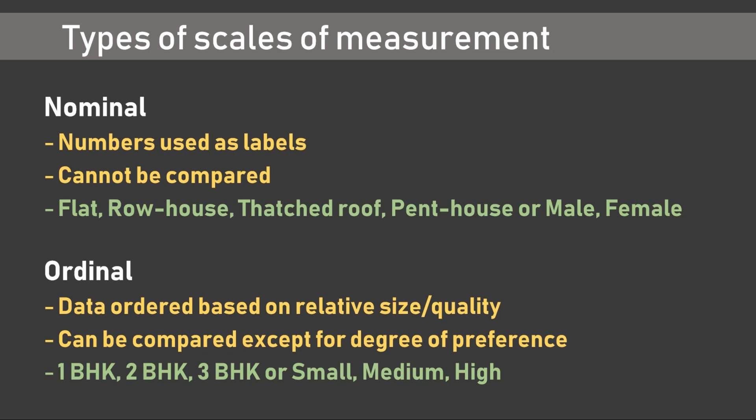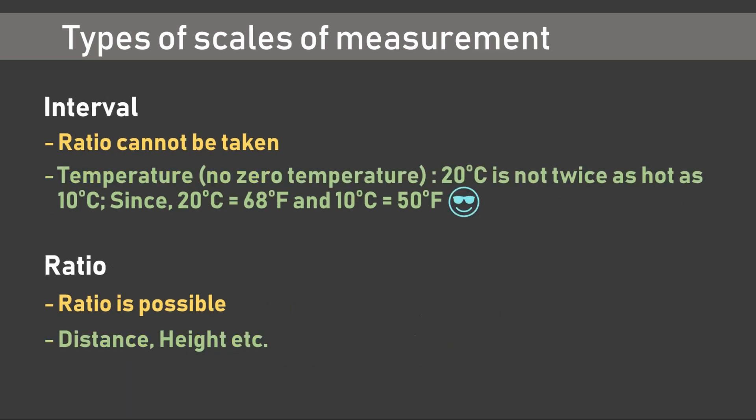They cannot be compared with each other numerically. In interval data there is no true zero, and hence a ratio cannot be taken. Let's understand the concept of true zero. If we take temperature, there is no concept of zero temperature. Also, 20 degrees Celsius is not twice as hot as 10 degrees Celsius — because 20°C equals 68°F and 10°C equals 50°F, and 68°F is clearly not twice that of 50°F.